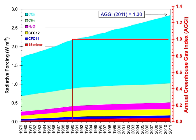A greenhouse gas is a gas that absorbs and emits radiant energy within the thermal infrared range. Greenhouse gases cause the greenhouse effect. The primary greenhouse gases in Earth's atmosphere are water vapor, carbon dioxide, methane, nitrous oxide, and ozone.